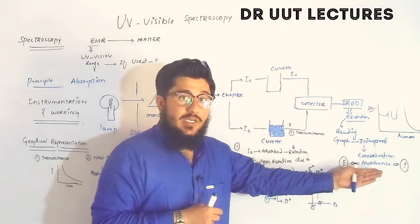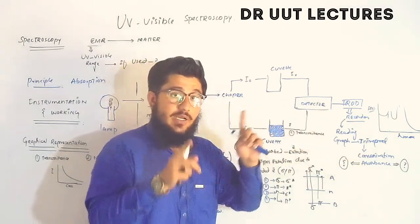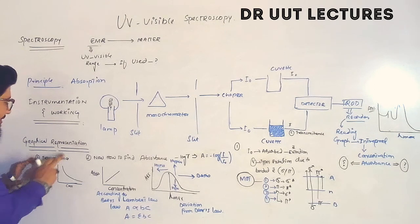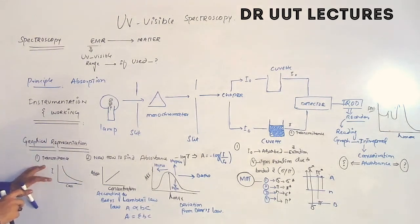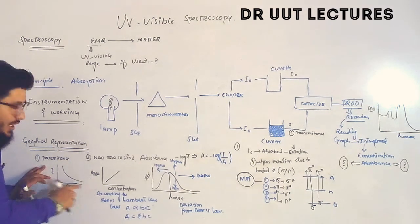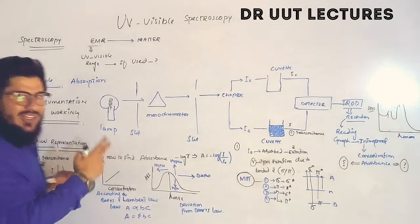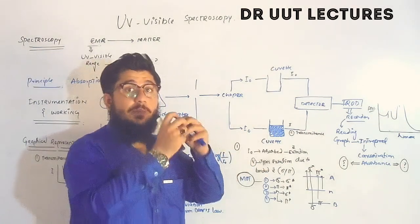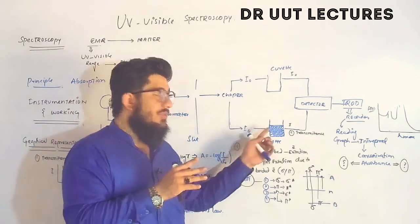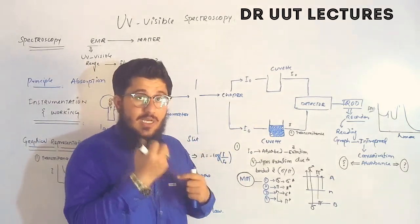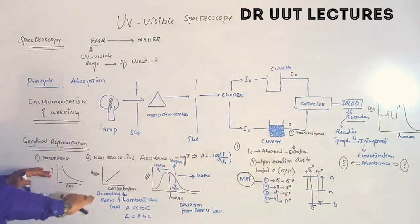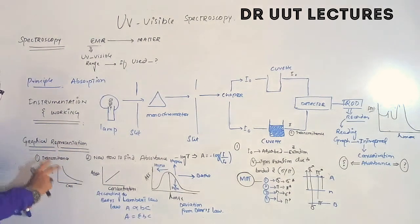Now, how do we get absorbance from the transmittance signal? The answer is mathematical interpretation. First, the transmittance graph shows transmitted light versus concentration — increasing concentration decreases transmittance. This is because higher concentration means more radiation is absorbed and less is transmitted, and vice versa.